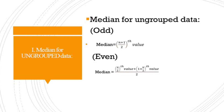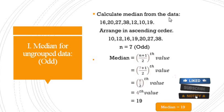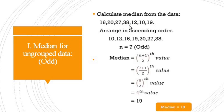Given data: 16, 20, 27, 38, 12, 10, and 19. We arrange this data in ascending order. The data arranged in ascending order is: 10, 12, 16, 19, 20, 27, 38.